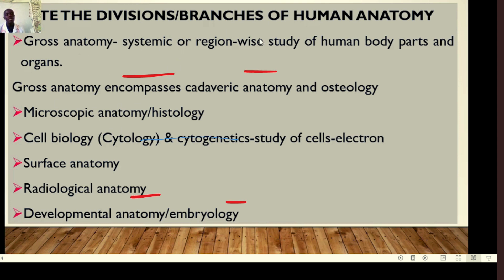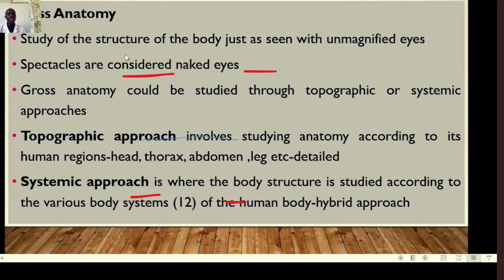Moving to the second objective — stating the divisions and branches of human anatomy — we have several branches: gross anatomy, microscopic anatomy, cell biology, surface anatomy, radiological anatomy, developmental anatomy or embryology, and so on. The main branch we normally use to study is gross anatomy. Gross anatomy encompasses cadaveric anatomy and osteology — the study of the structure of the human body as seen with unmagnified eyes.